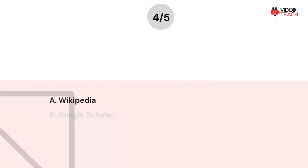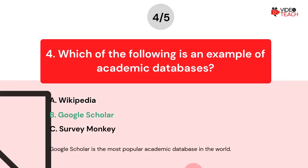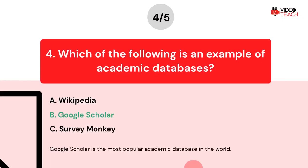The correct answer is Option B. Google Scholar is the most popular academic database in the world.